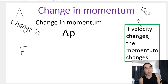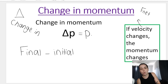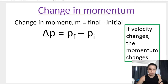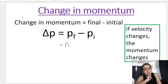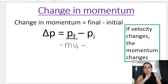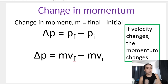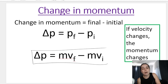Change in momentum is your final momentum minus your initial momentum, because change is always final minus initial. Breaking that formula down further: momentum is mass times velocity, so final momentum uses final velocity and initial momentum uses initial velocity. The formula becomes: Δp = mvf − mvi. Mass stays the same while velocity changes, so you can also factor out mass to get Δp = m(vf − vi). The version on your formula sheet is Δp = mvf − mvi.